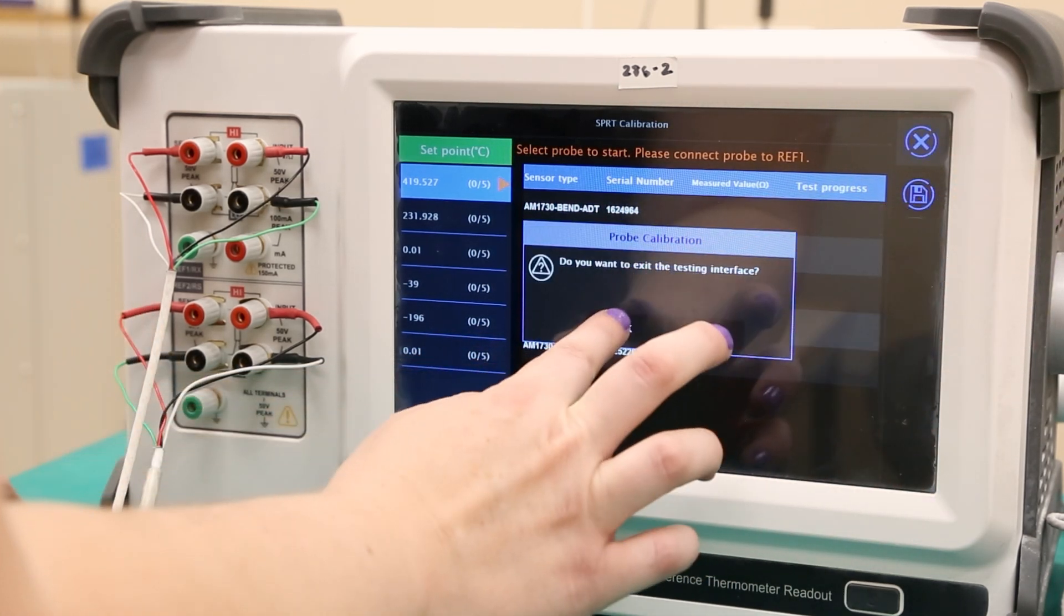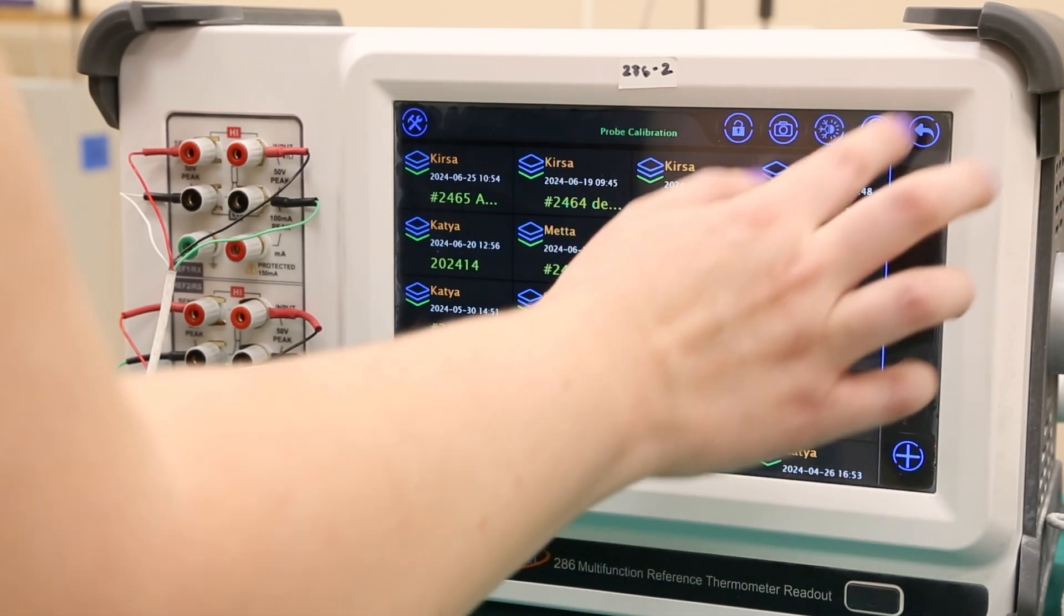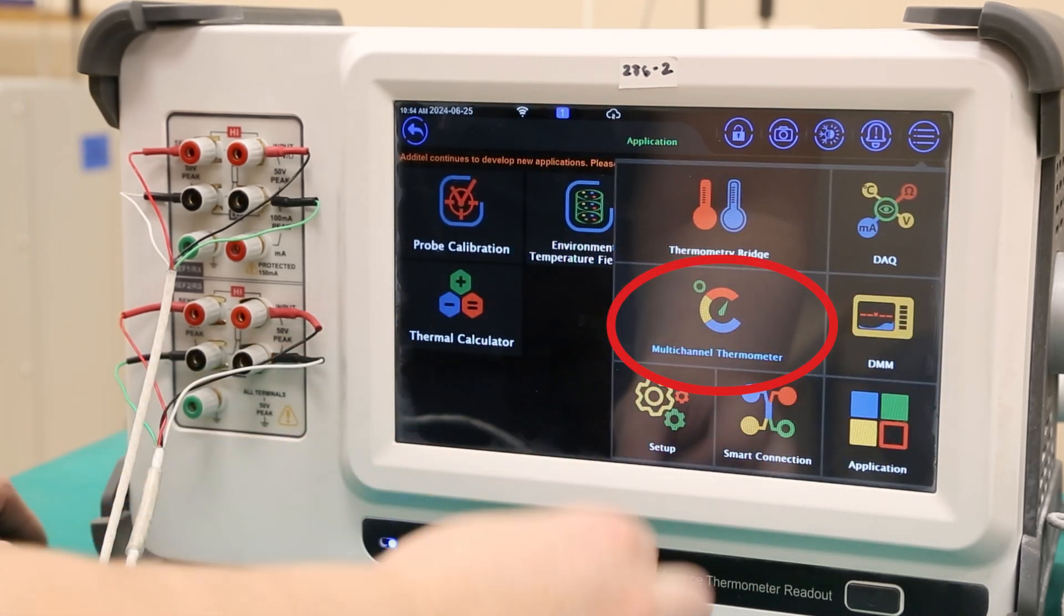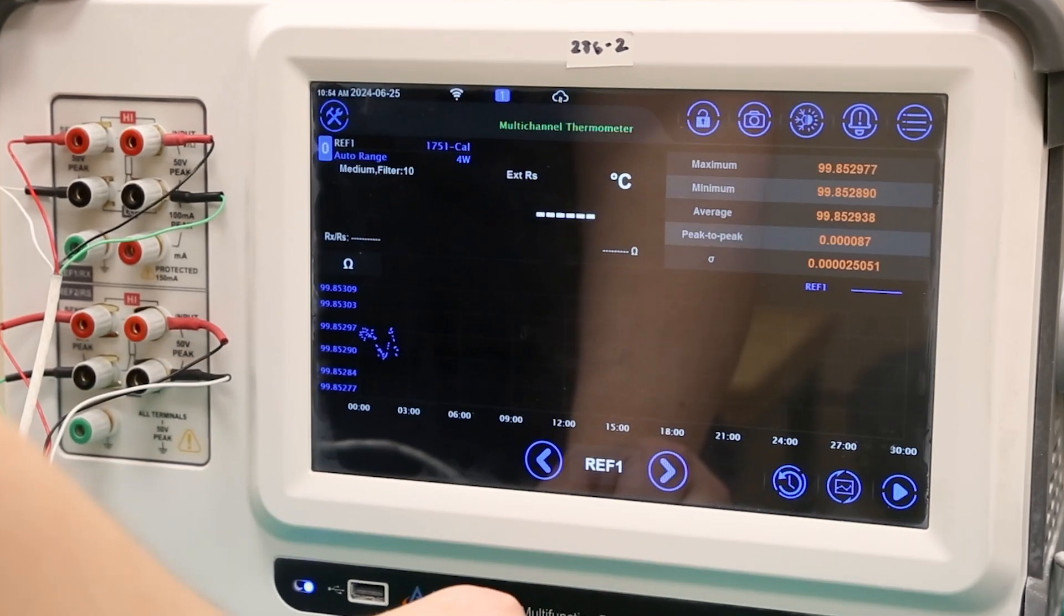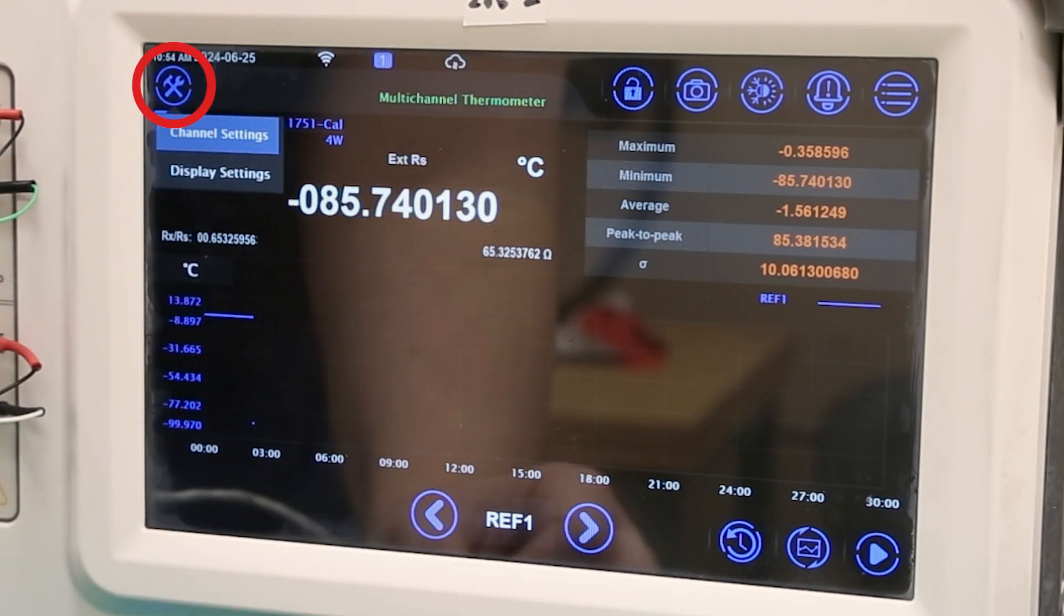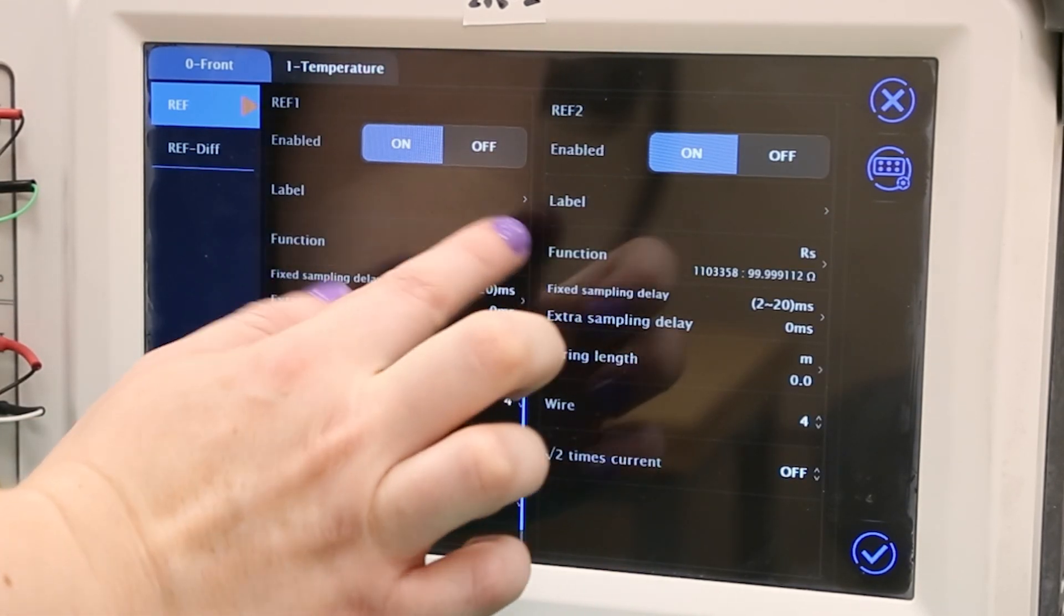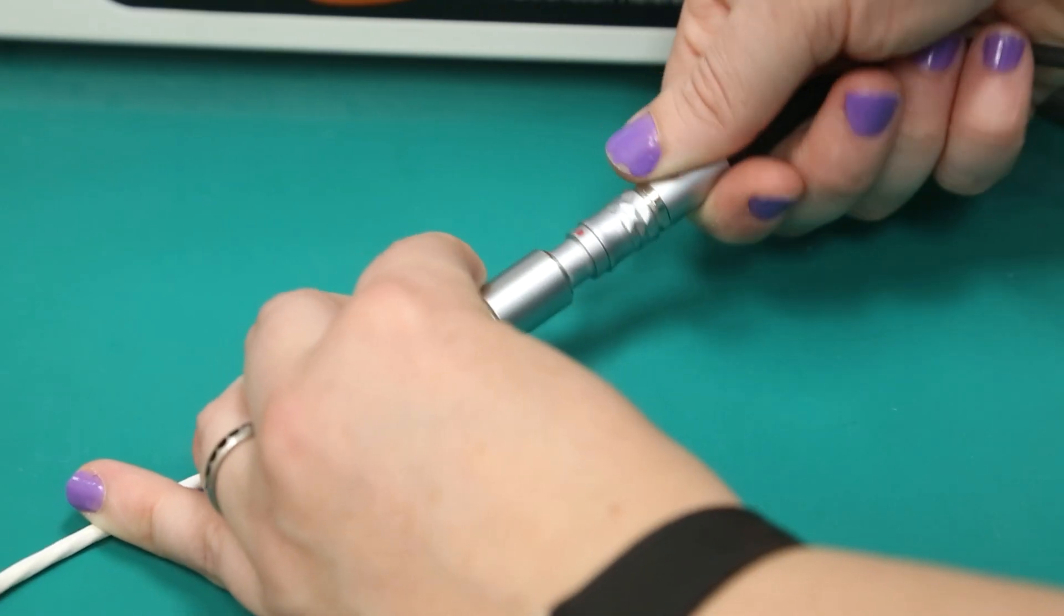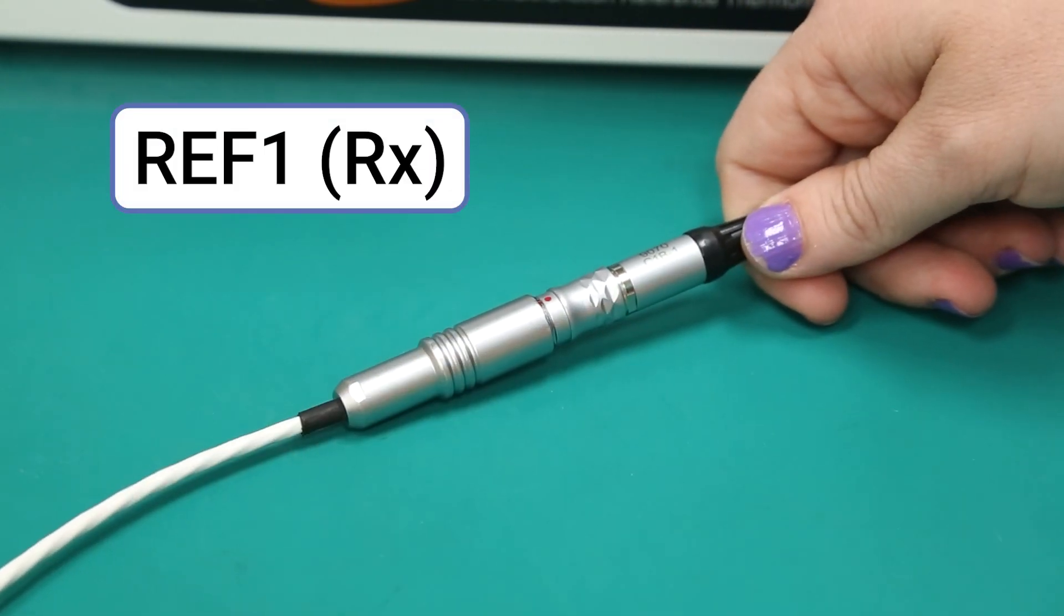From here, we are ready to start, but first want to check that the zinc fixed point cell has reached the freezing point. For this, we will select the multi-channel thermometer from the application menu. To change the channel settings, select the tools icon from the top left corner. Here you can select the correct reference thermometer to check the calibration point.